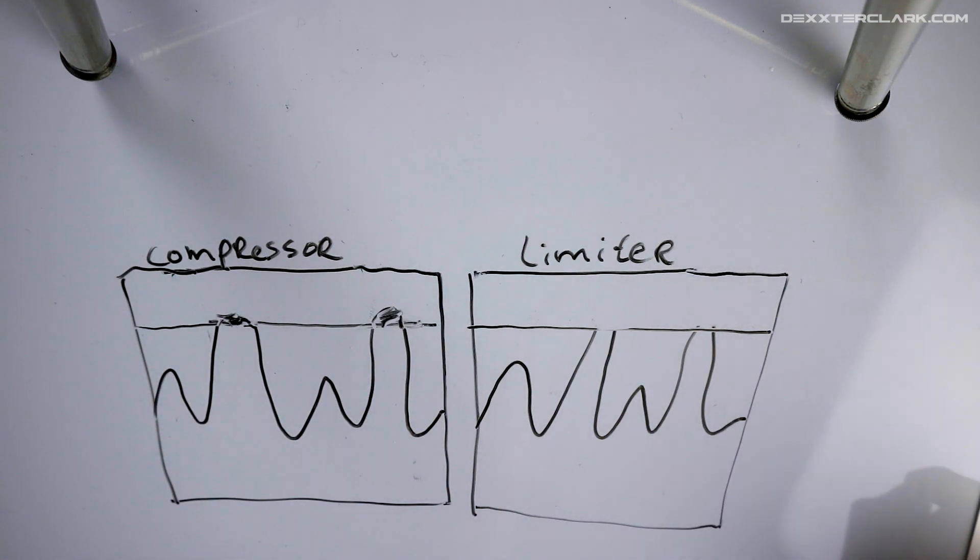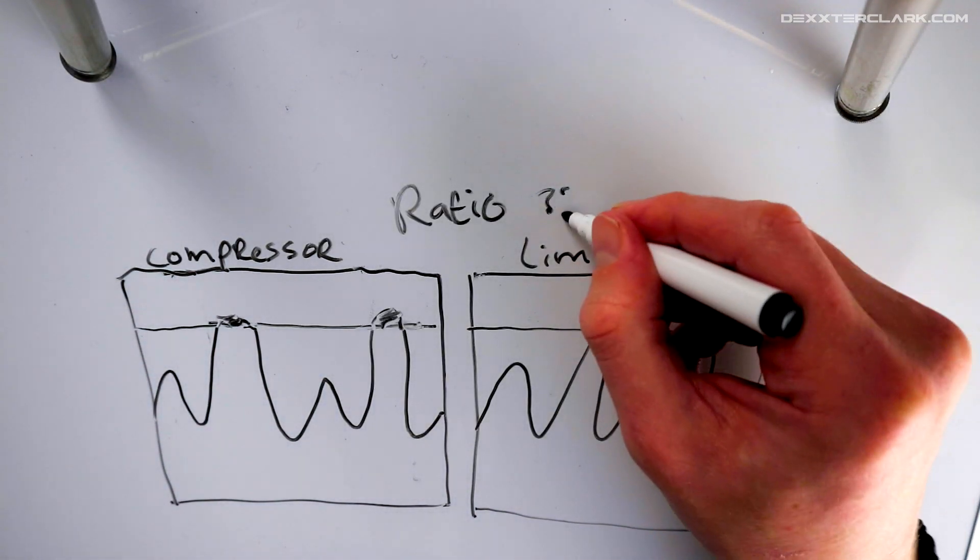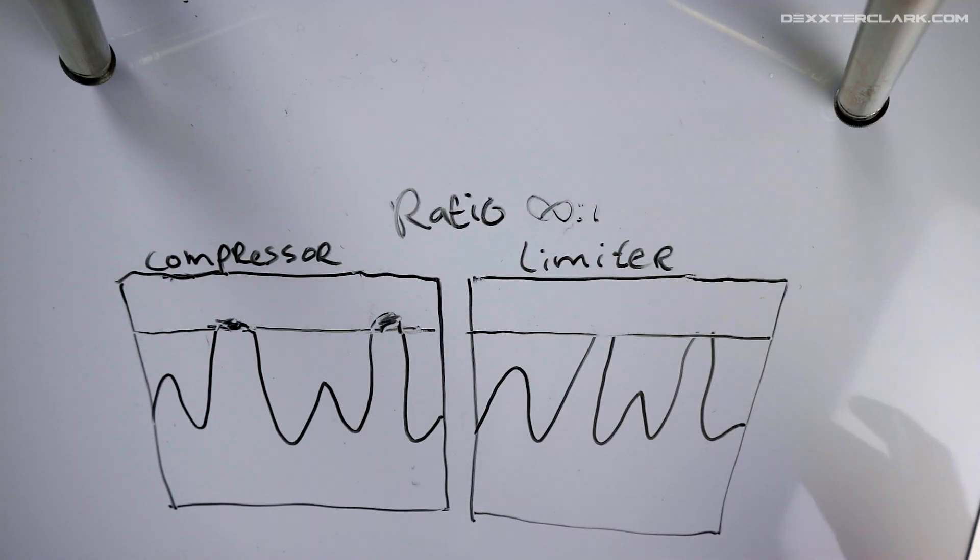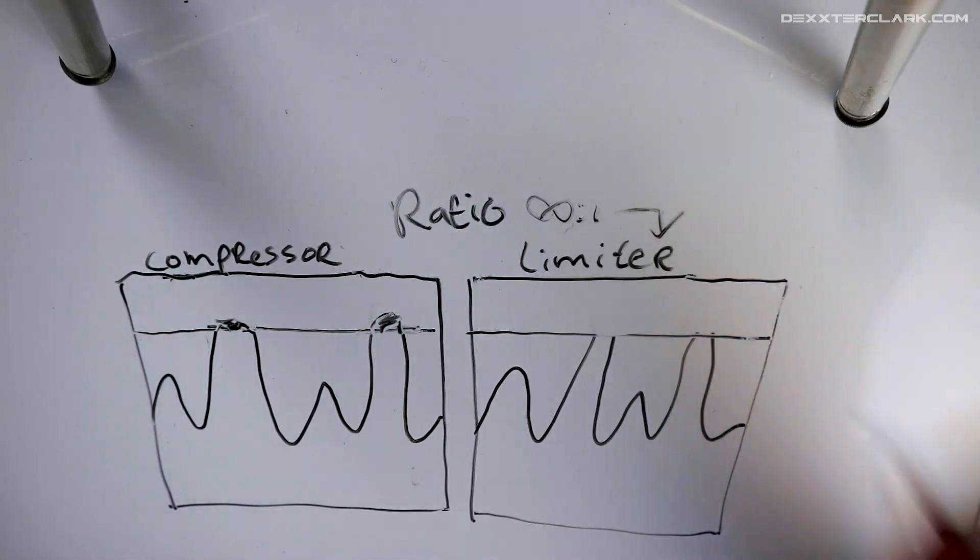How much this volume is reduced is determined by the ratio, for example, 3 to 1, 6 to 1. But if we have an infinite ratio, that is effectively a limiter.